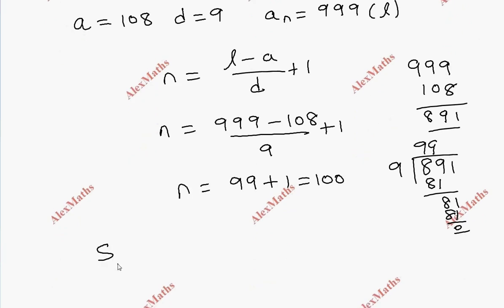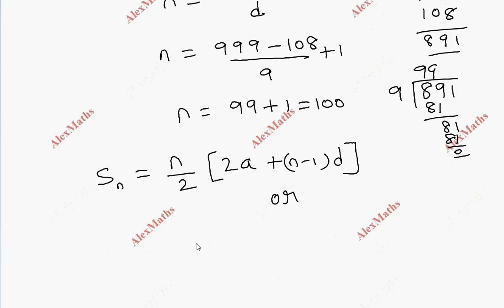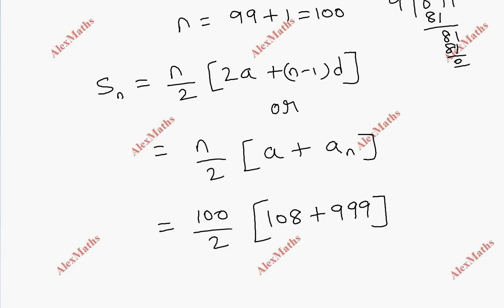Now, the sum formula is: S = n divided by 2, multiplied by (2A plus (n minus 1) into D). Using the last term form, S = n by 2 into (A plus L). So S = 100 by 2 into (108 plus 999).